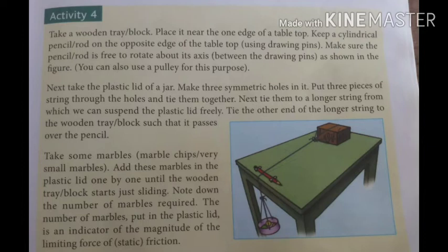Suppose six marbles are required before the box just starts to slide. This means the force applied by the six marbles overcomes the static friction, and the block is now under sliding friction and begins to slide over the tabletop. Once the wooden block begins to slide, take out some marbles from the plastic lid.